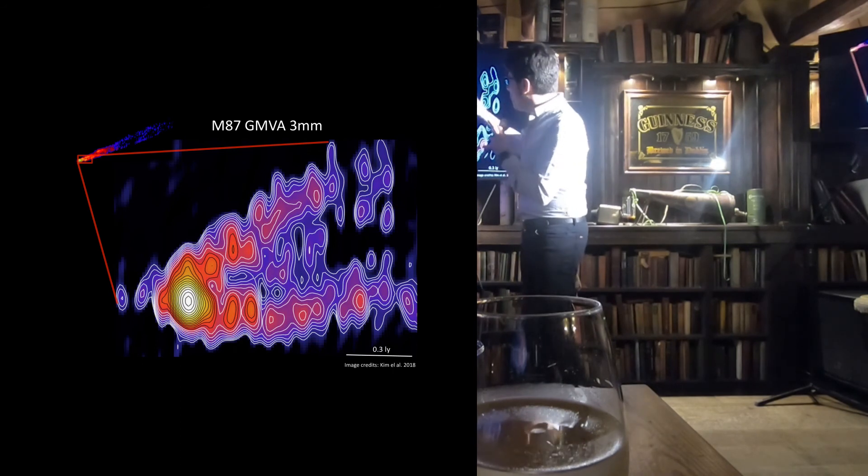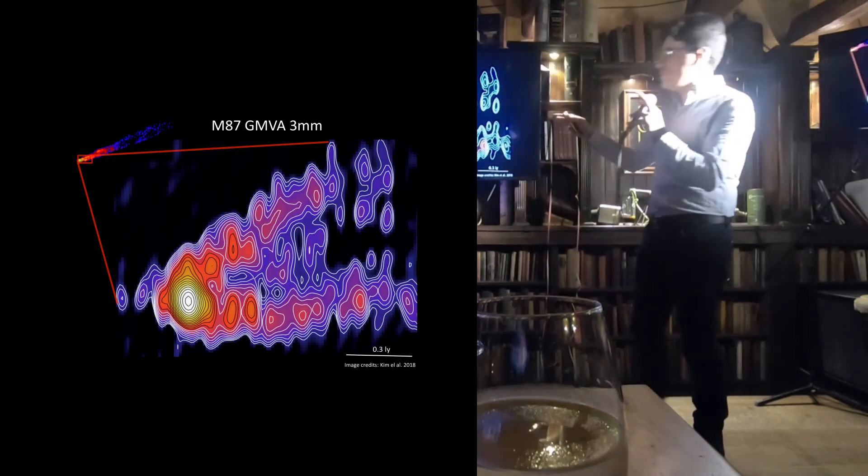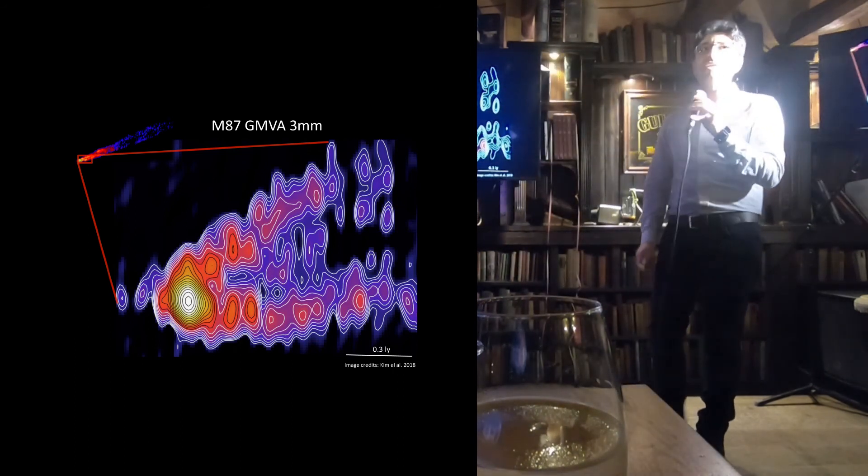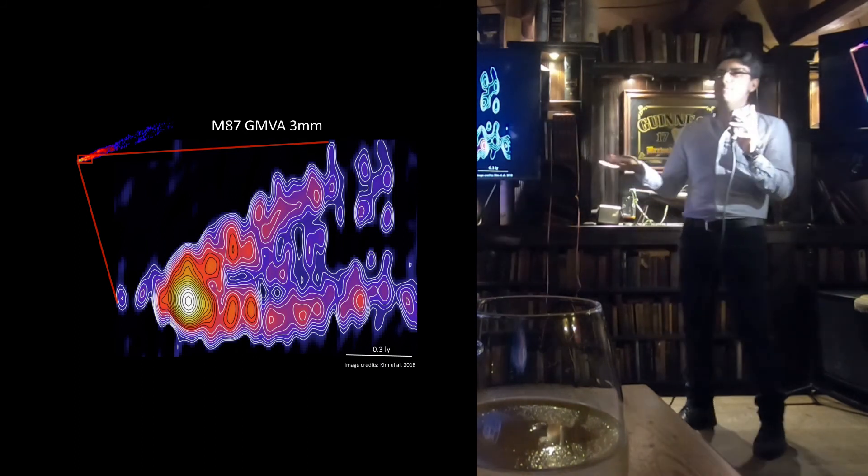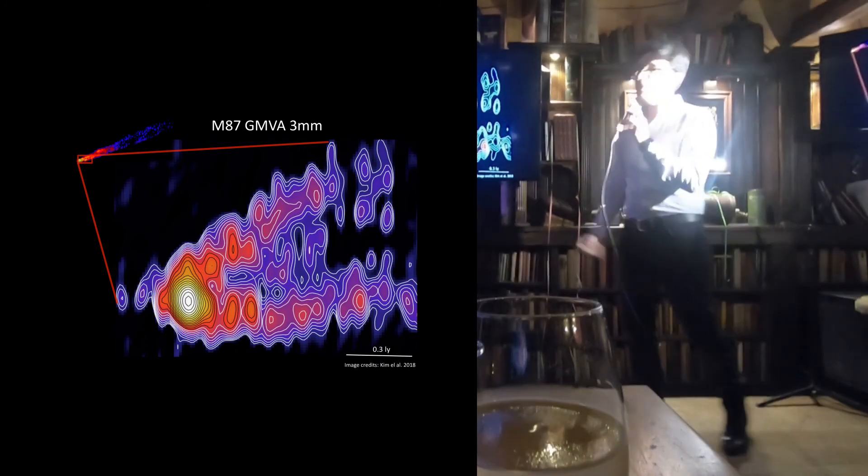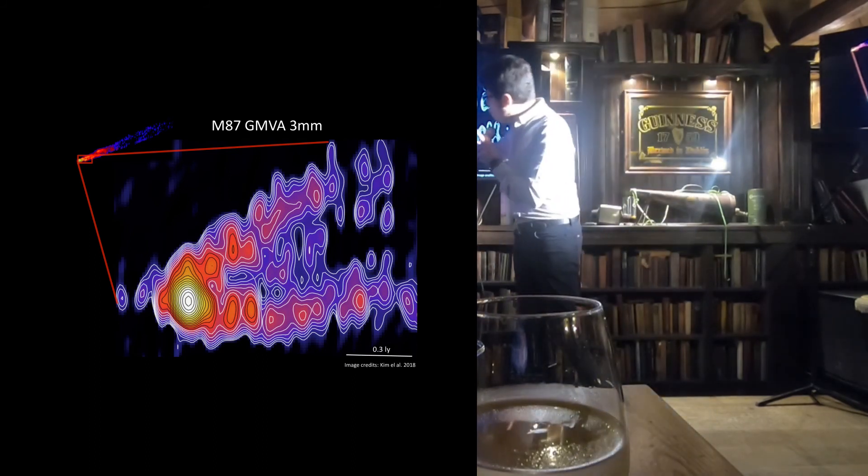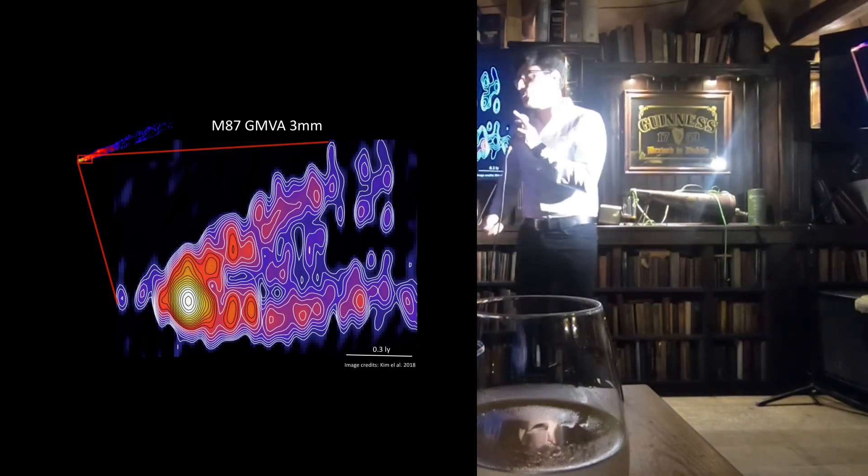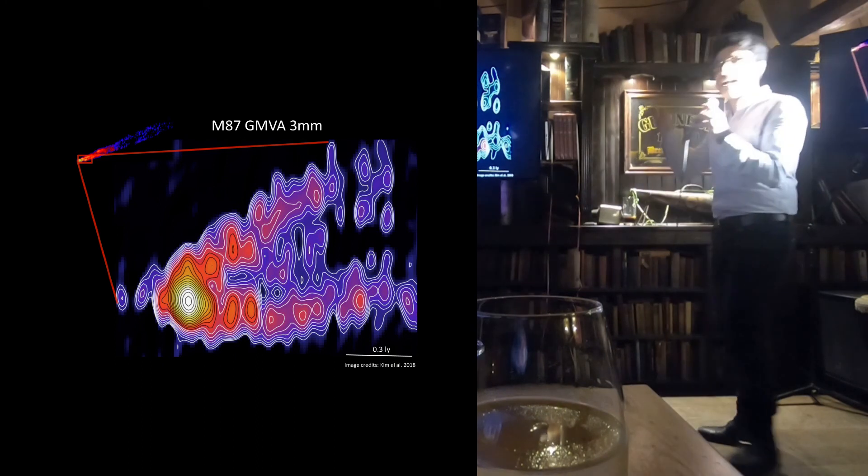And now, we can really see the fine structure and the transverse structure of the jet close to the black hole. I mean, now we can be maybe satisfied but we are not. We want to still zoom there and we can do it. We want really to zoom here to see this monster, to reveal the monster that is hiding there.